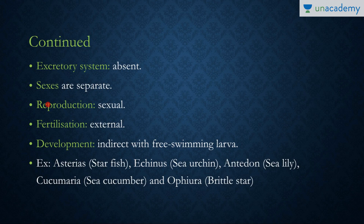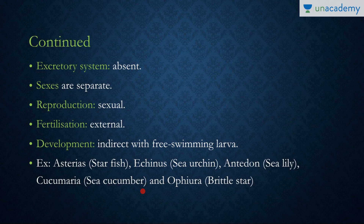The excretory system is absent in this phylum. The sexes are separate; only sexual reproduction is present, fertilization is external, development is indirect, and they have free-swimming larvae. The examples from NCERT are: Asterias (starfish), Echinus (sea urchin), Antedon (sea lily), Cucumaria (sea cucumber), and Ophiura (brittle star).